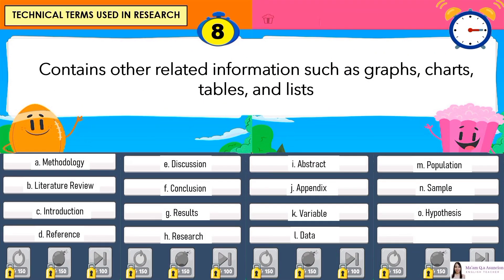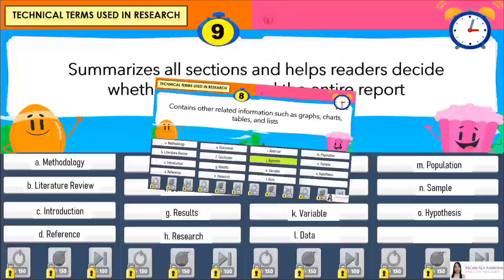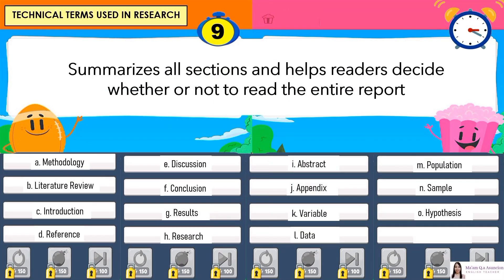Number 8: Contains other related information such as graphs, charts, tables, and lists. Answer is J. Appendix. Number 9: Summarizes all sections and helps readers decide whether or not to read the entire report. Answer is I. Abstract.